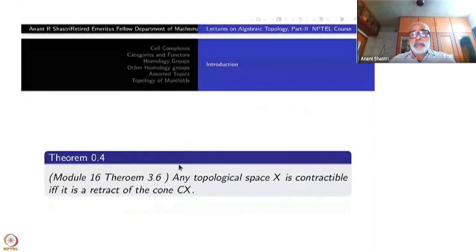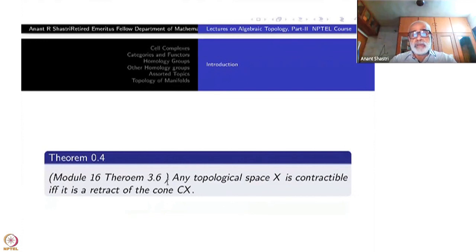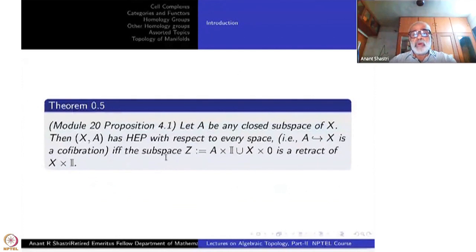Module 16, Theorem 3.6: Any topological space X is contractible if and only if it is a retract of the cone. Module 20, Proposition 4.1: Let A be any closed subspace of X. Then (X, A) has the homotopy extension property with respect to every space, that is, A → X is a cofibration, if and only if the subspace Z, which is A × I ∪ X × {0}, is a retract of X × I. This is a very useful result.